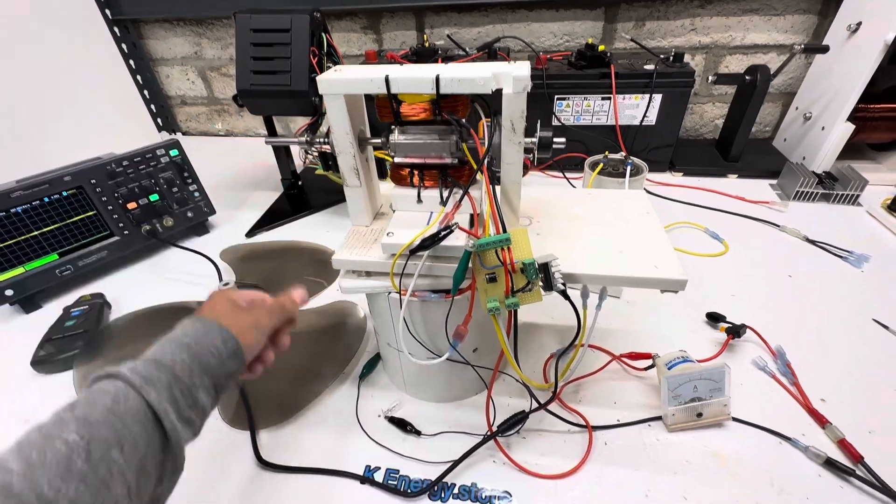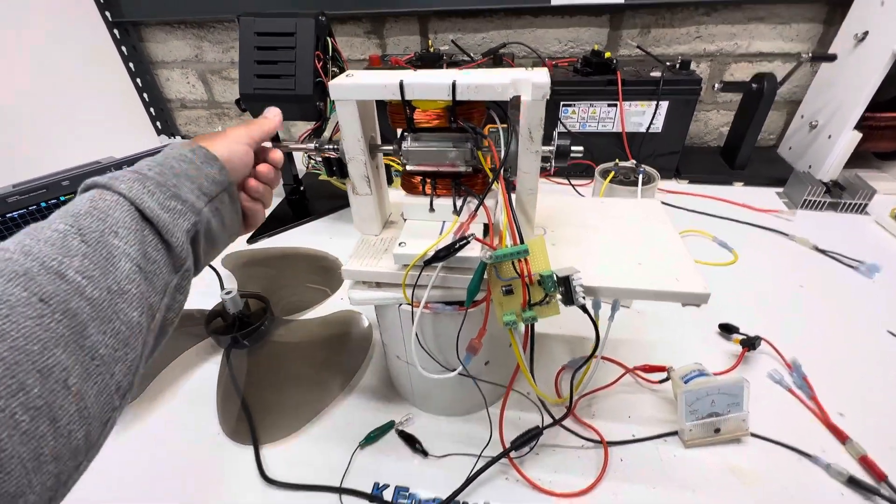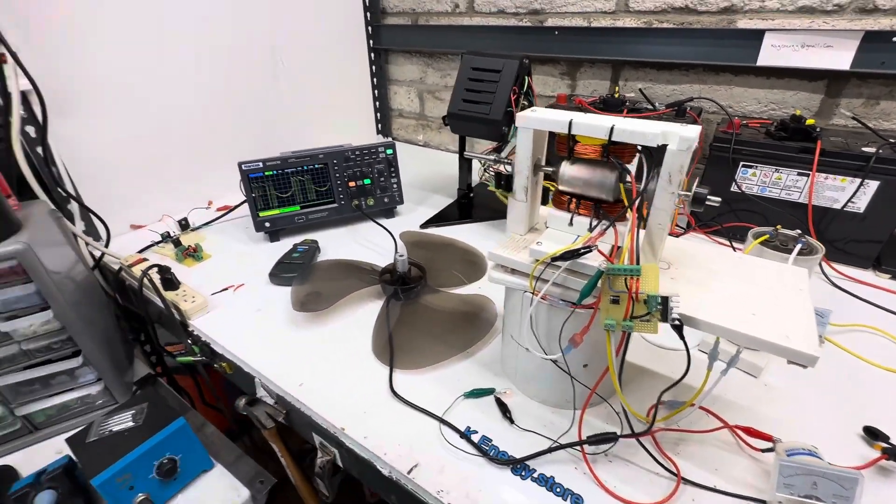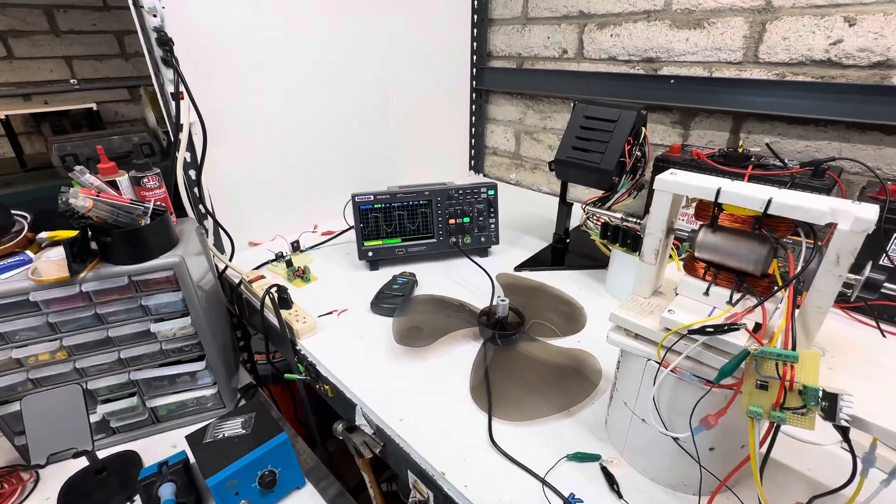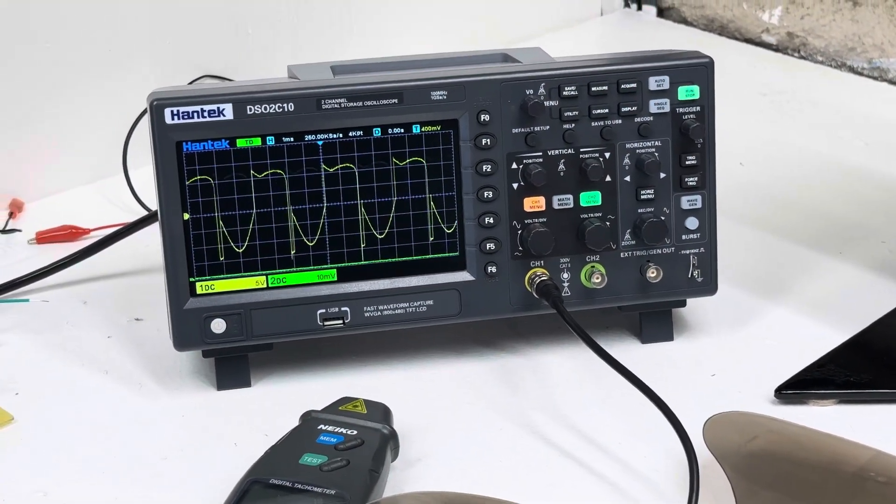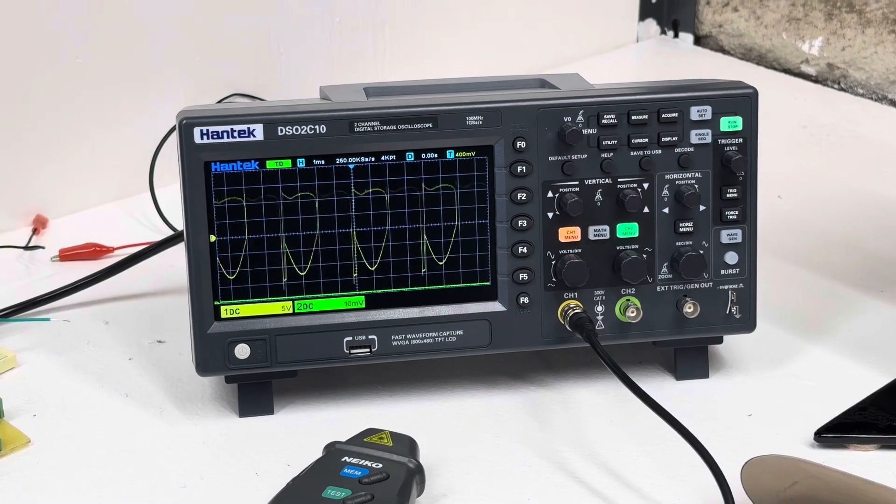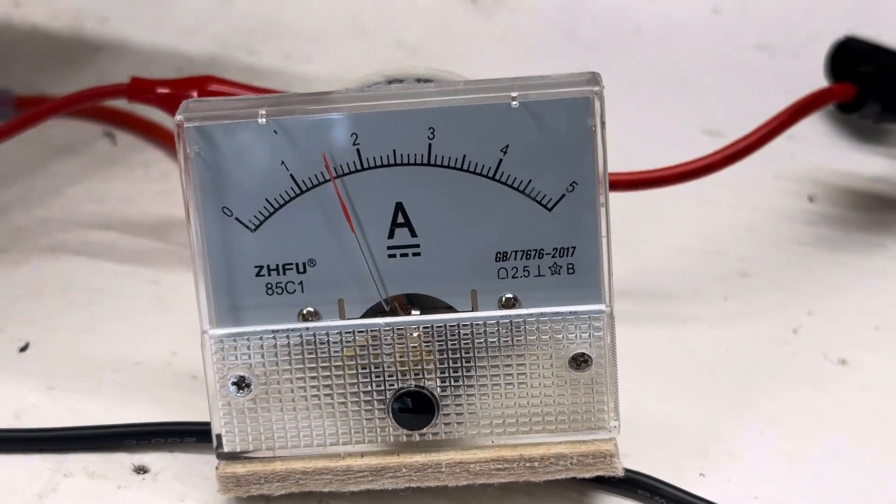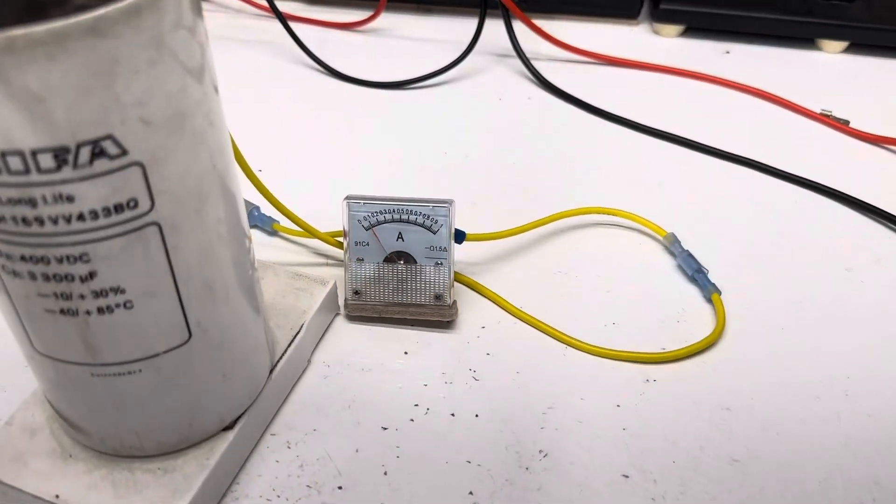Let me hook up this so you can see the scope. It gets down to one pulse per cycle there, and we're using one and a half amps.